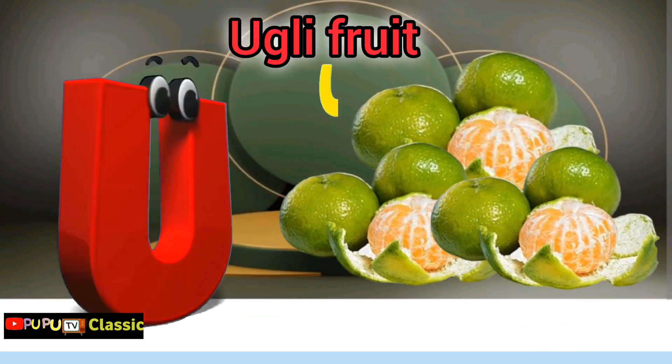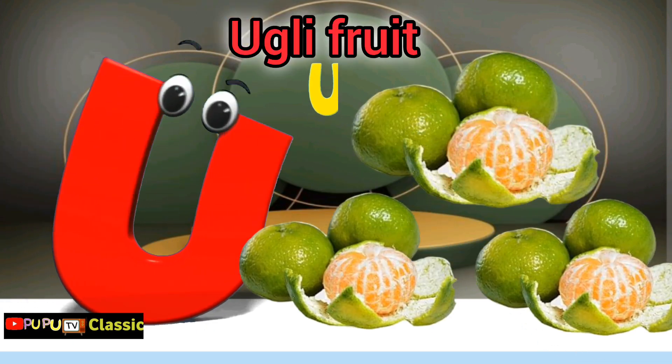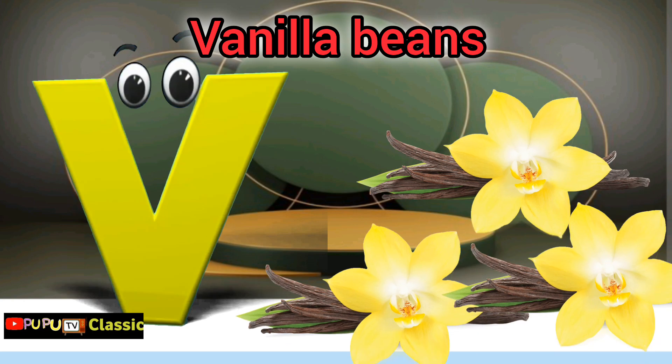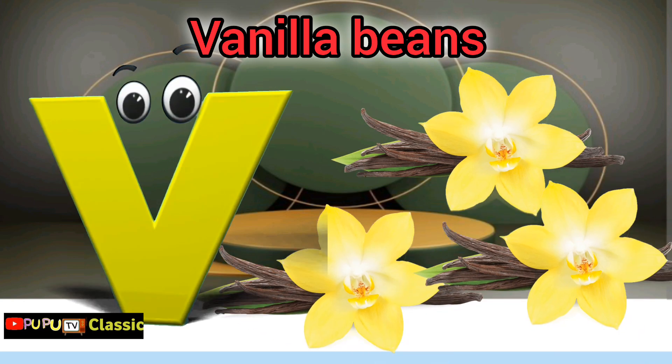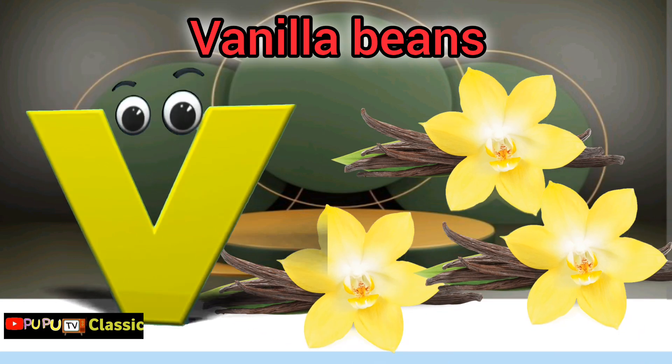U is for ugly fruit, u-uh-uh-ugly fruit. V is for vanilla beans, v-v-v-vanilla beans.